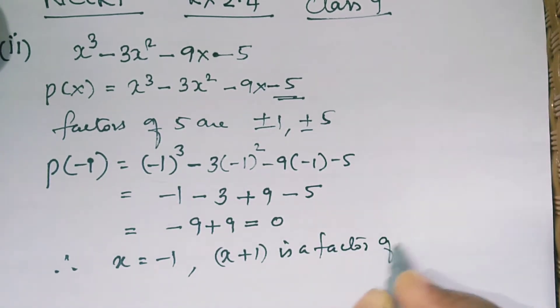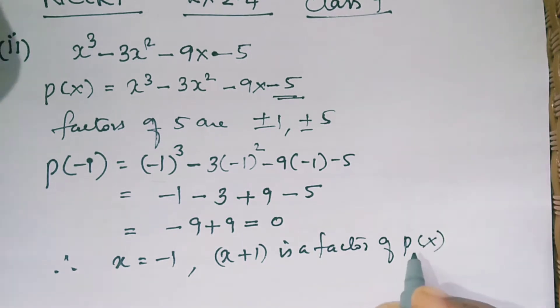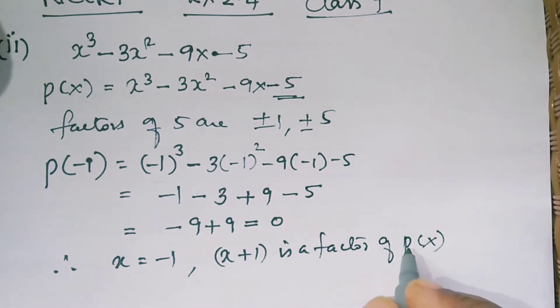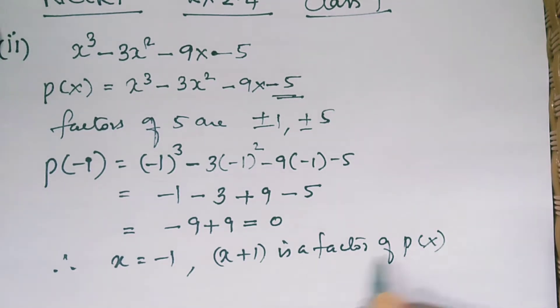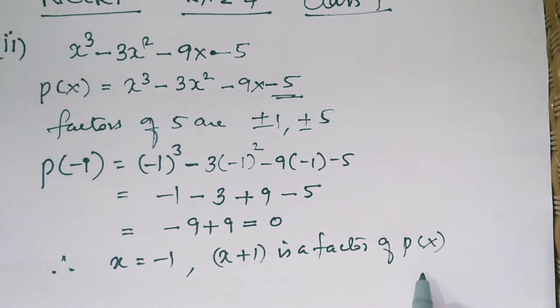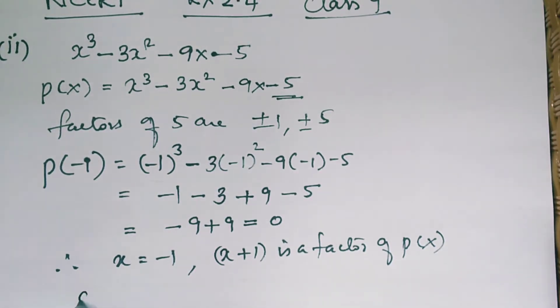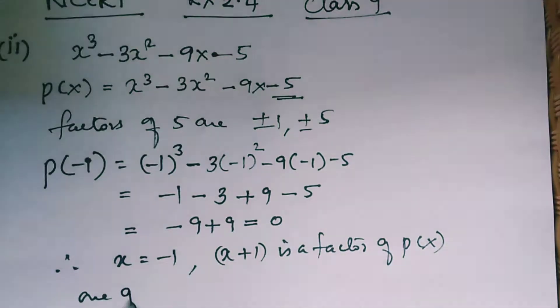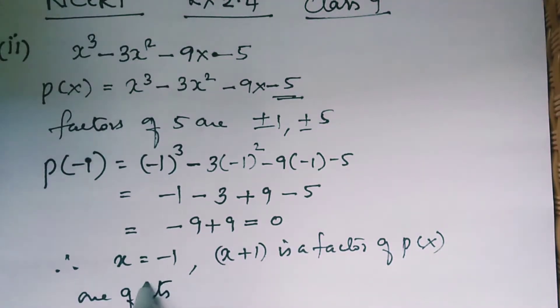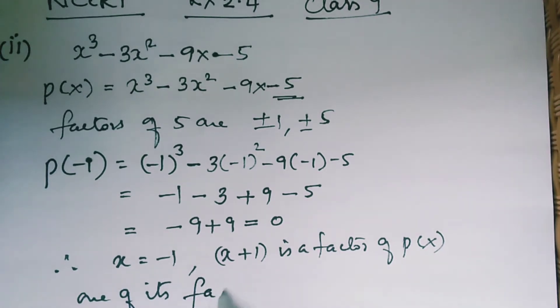Since x equals minus 1 is a root, x plus 1 is a factor of p(x). When minus 1 is shifted to the other side, you get x plus 1 as one of its factors.